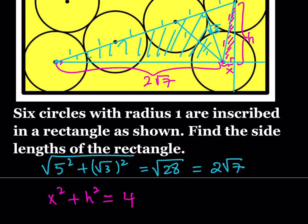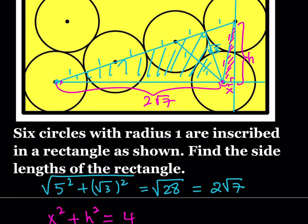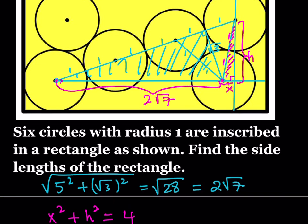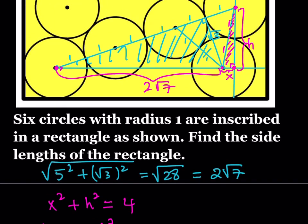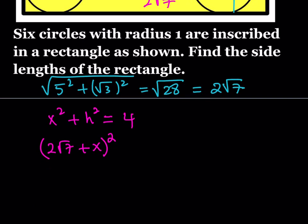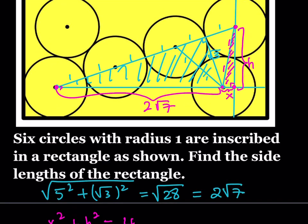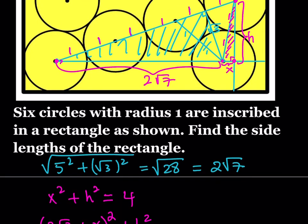I have two variables in one equation, so I need another equation. That equation comes from the big right triangle whose vertices I'm marking right now. The base of this big right triangle is 2 root 7 plus X, so that's my base squared for the Pythagorean theorem. The height is the same H, so plus H squared. The hypotenuse I can measure — it's 1, 2, 3, 4, 5, and 6 radii along that segment — so that's 6, and if you square it, it's 36.